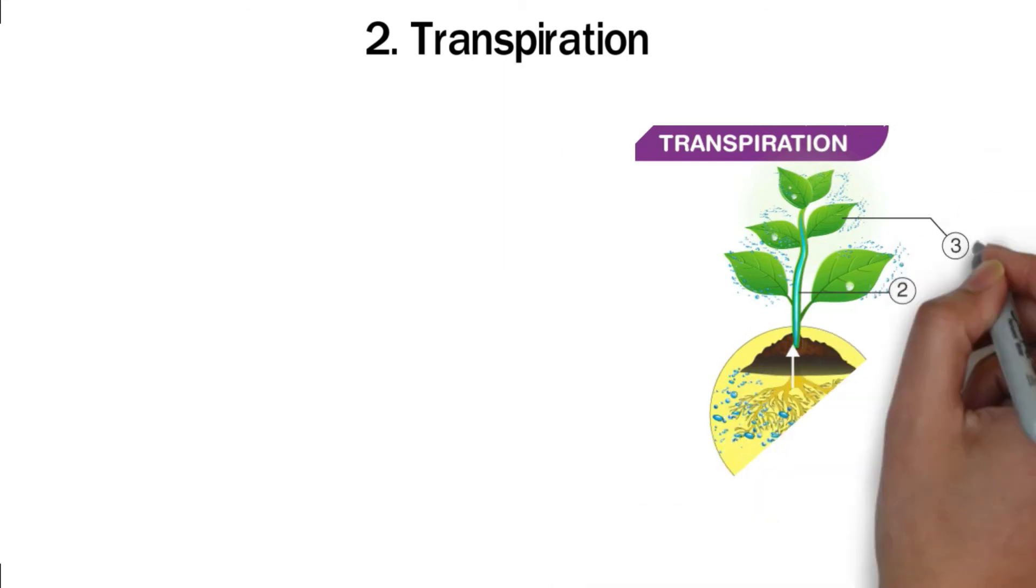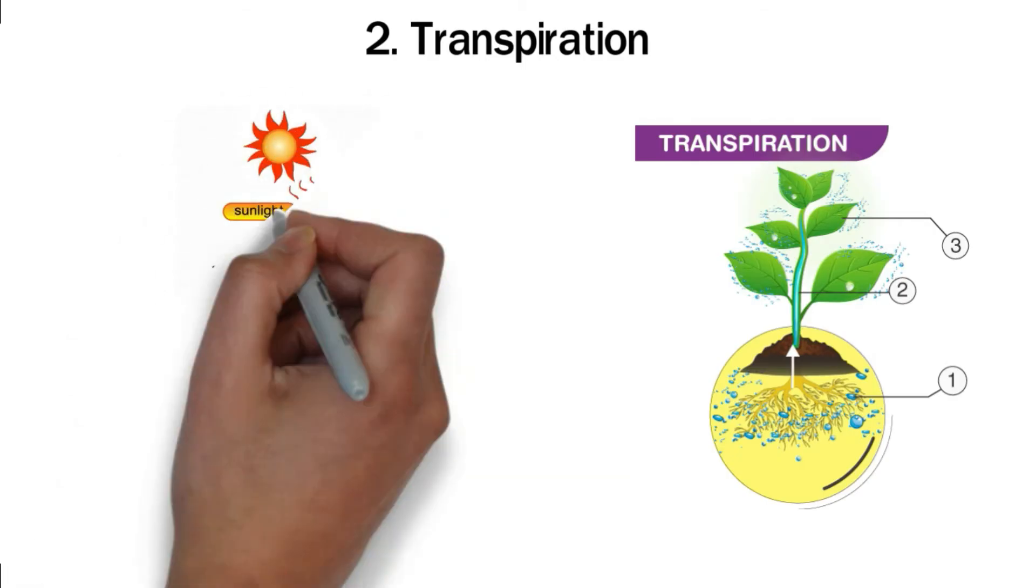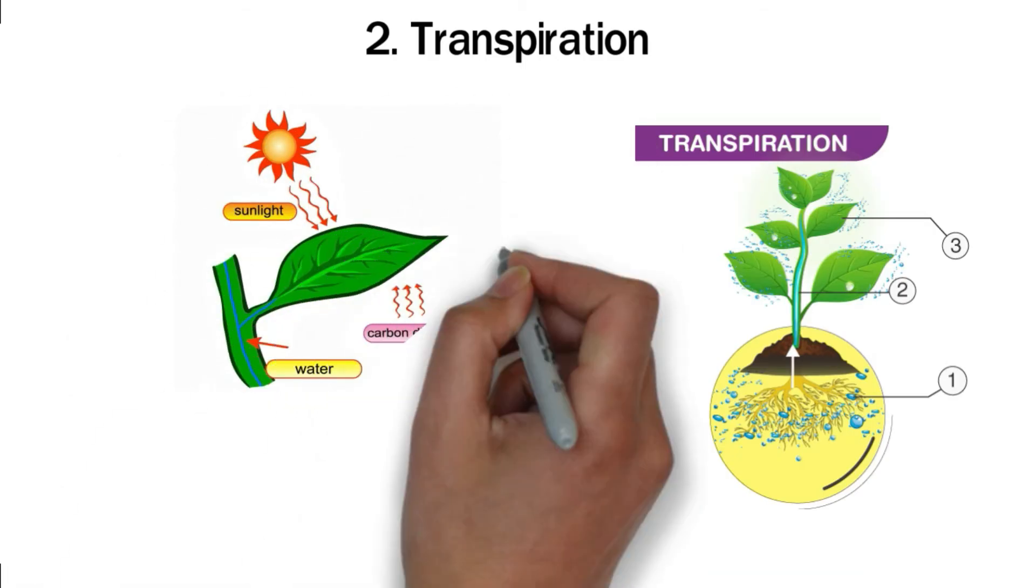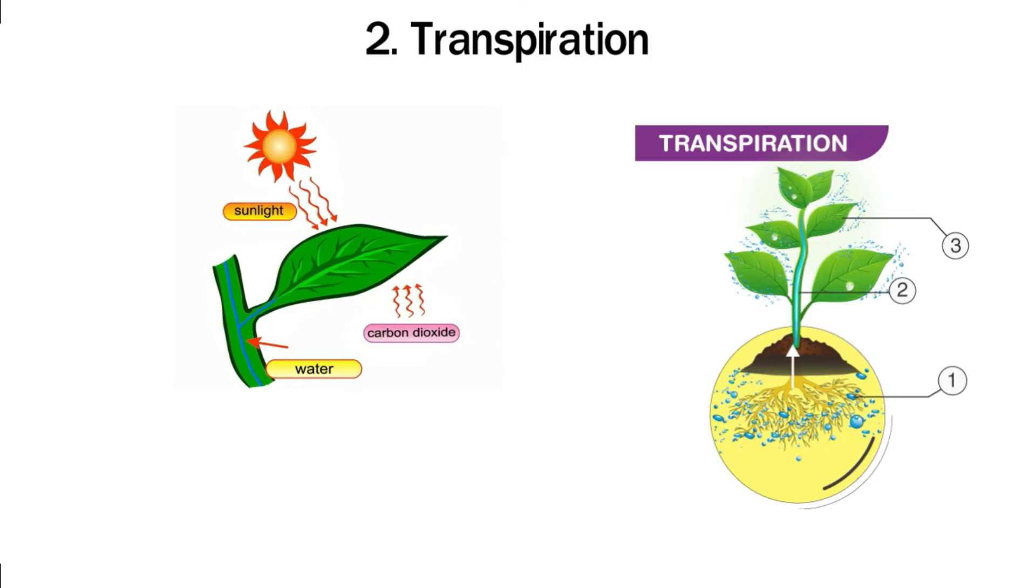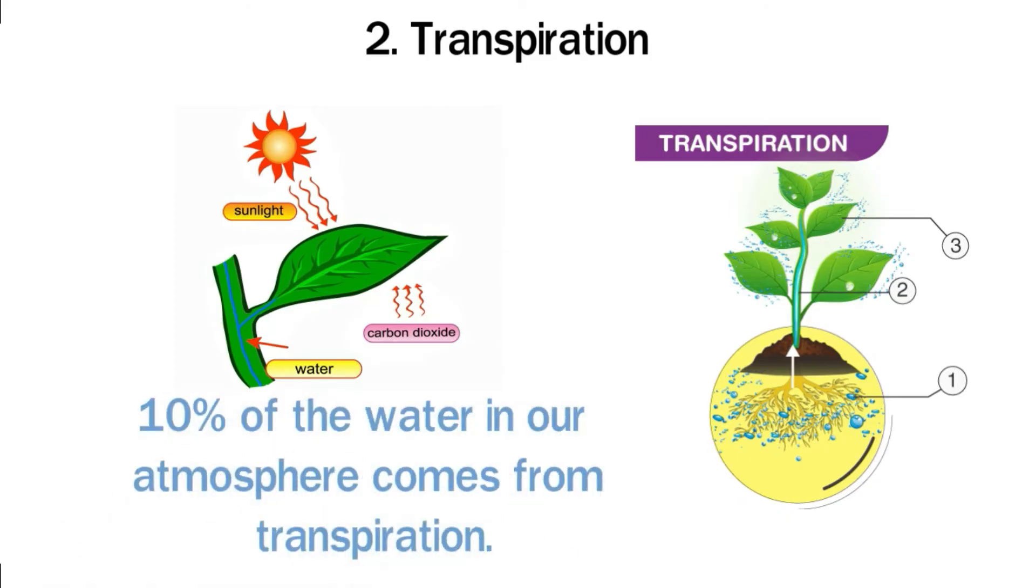2. Transpiration. Transpiration is the process by which plants release water vapor into the environment through the stomata. Transpiration occurs during photosynthesis as plants make their food. Research shows that up to 10% of the water in our atmosphere comes from transpiration. Plants contribute a lot to the water cycle.